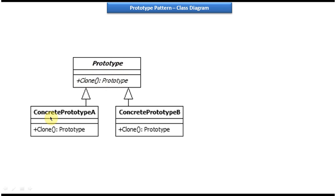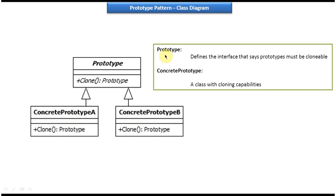Down you can see two concrete classes. The first class is ConcretePrototypeA and the other is ConcretePrototypeB. Both of these classes implement the Prototype interface and provide an implementation of the clone method. The clone method in ConcretePrototypeA returns a copy of the ConcretePrototypeA object, and the clone method in ConcretePrototypeB returns a copy of the ConcretePrototypeB object.